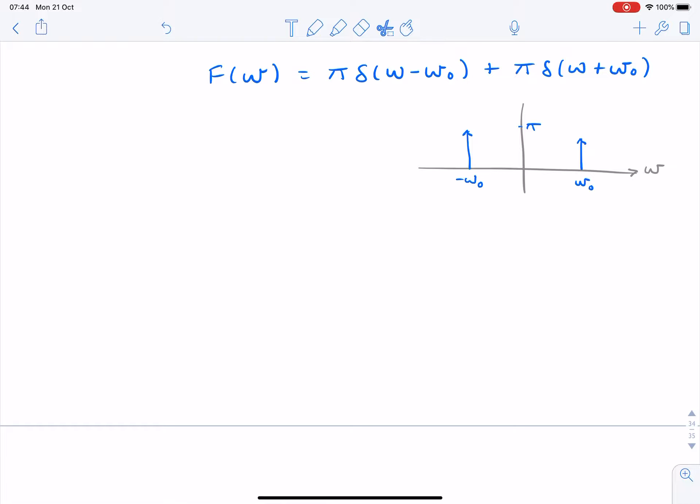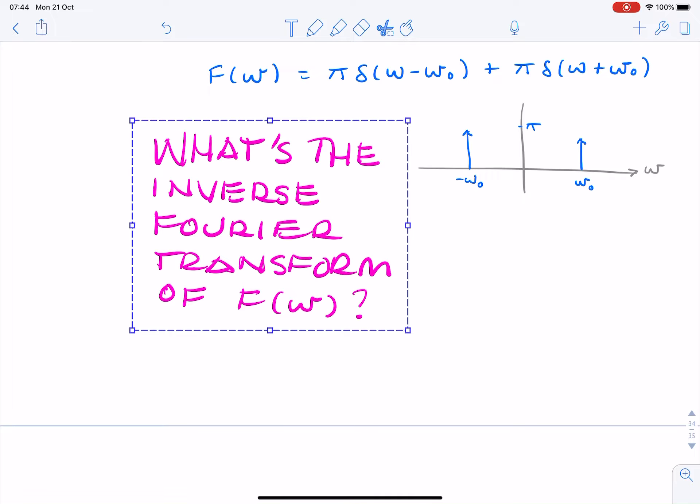In this example, we're given a pair of impulses in the frequency domain, one at omega nought and one at negative omega nought. So we have a pair of impulses in the frequency domain, and the question is, what is the time domain equivalent? What is the inverse Fourier transform?